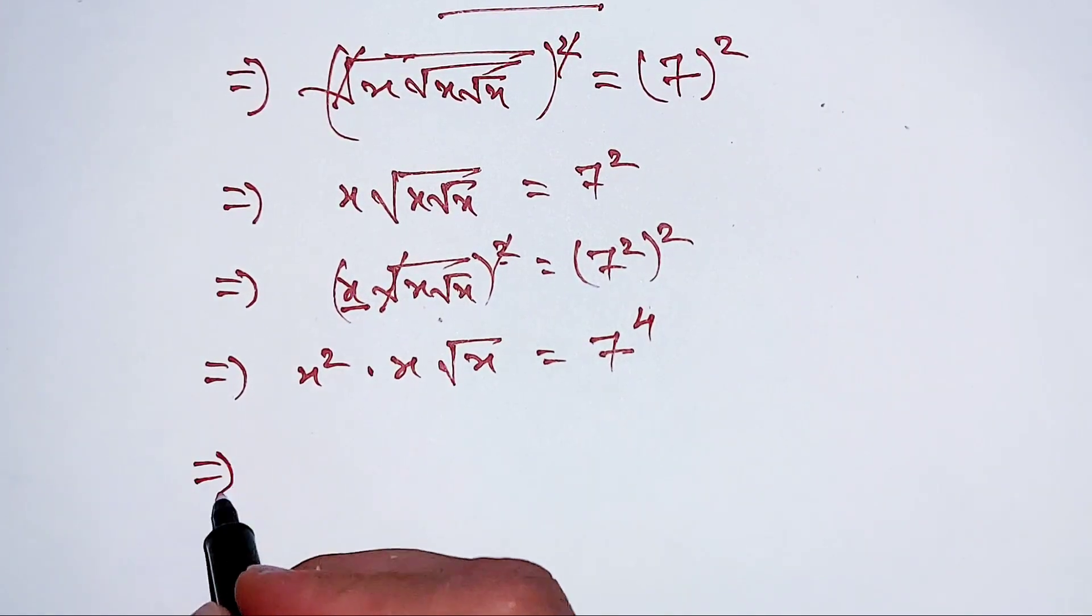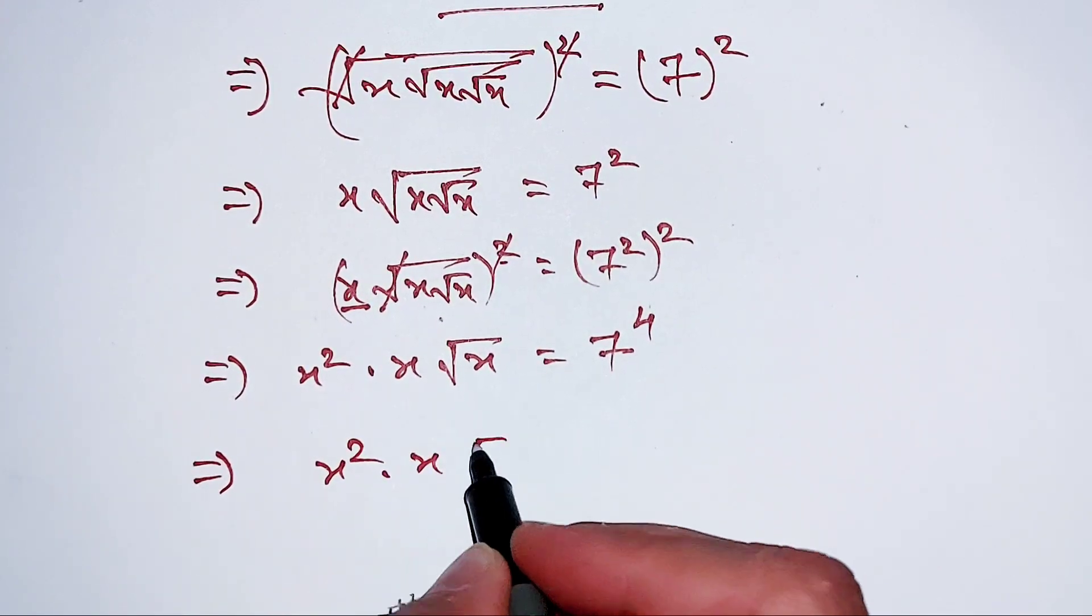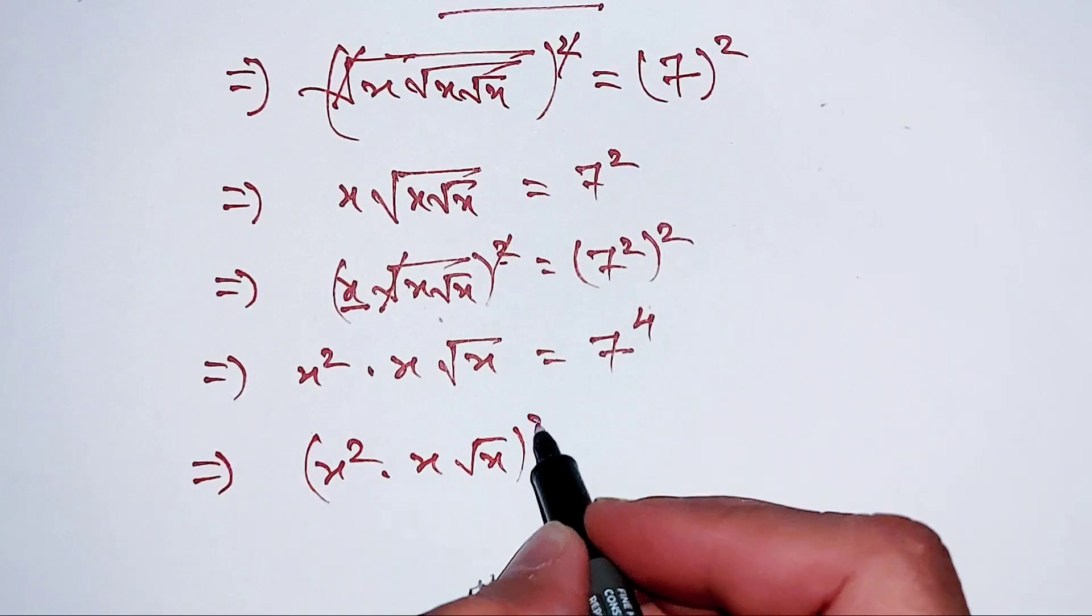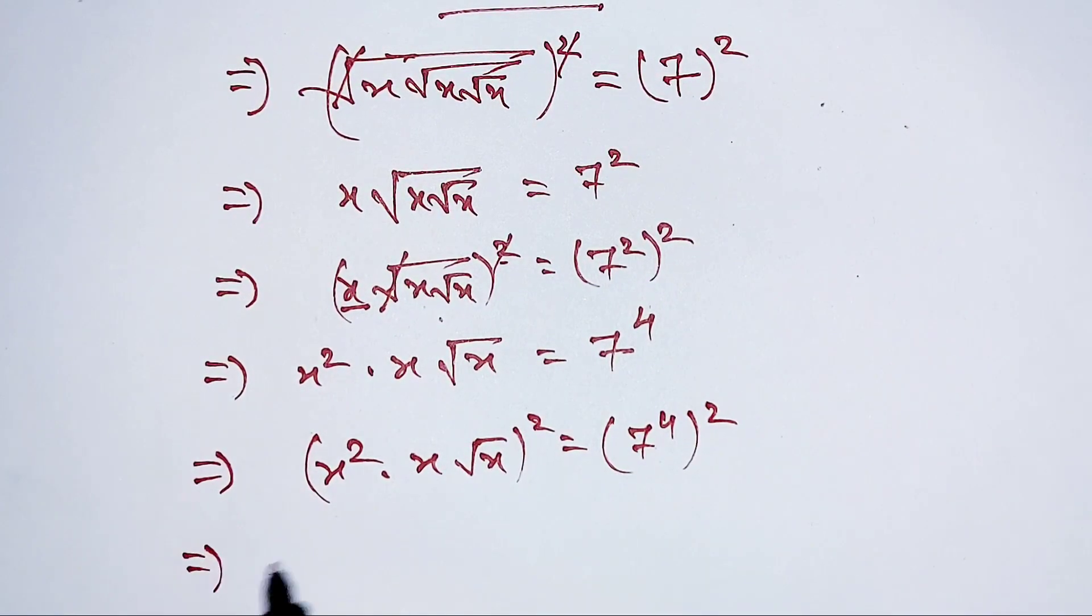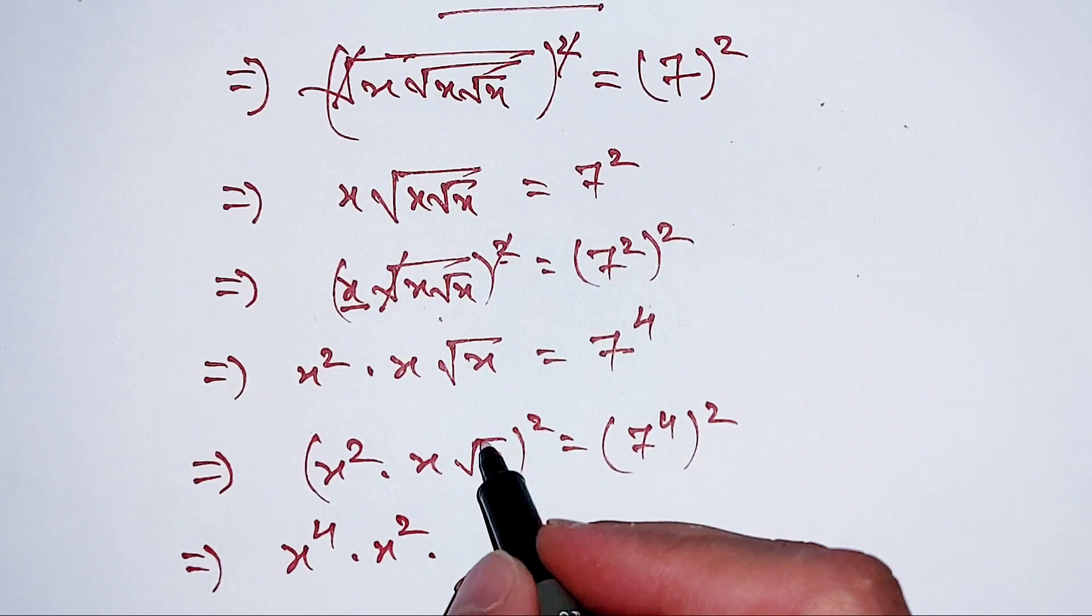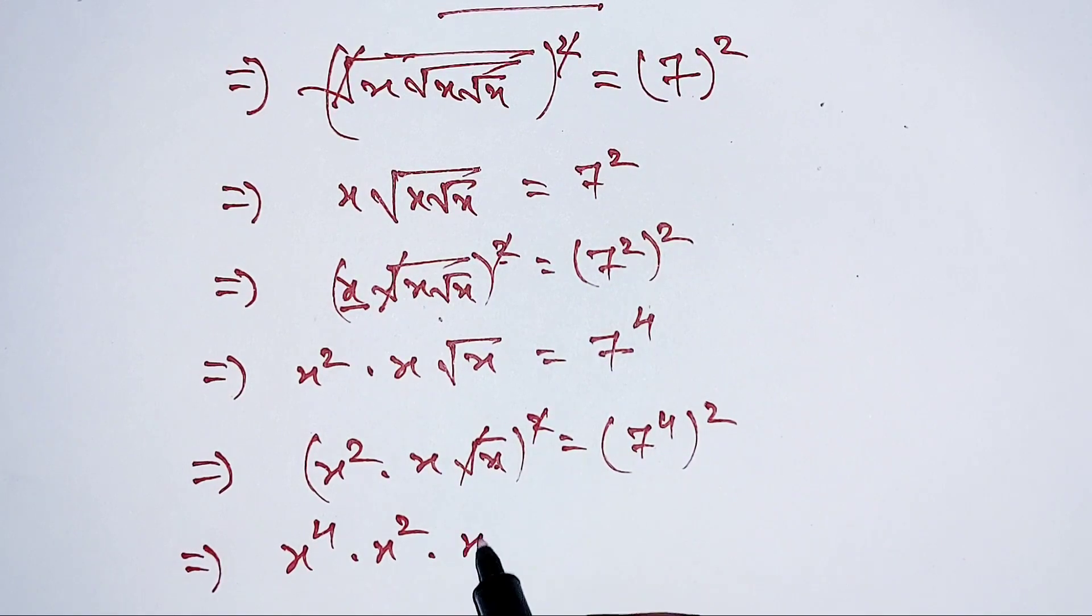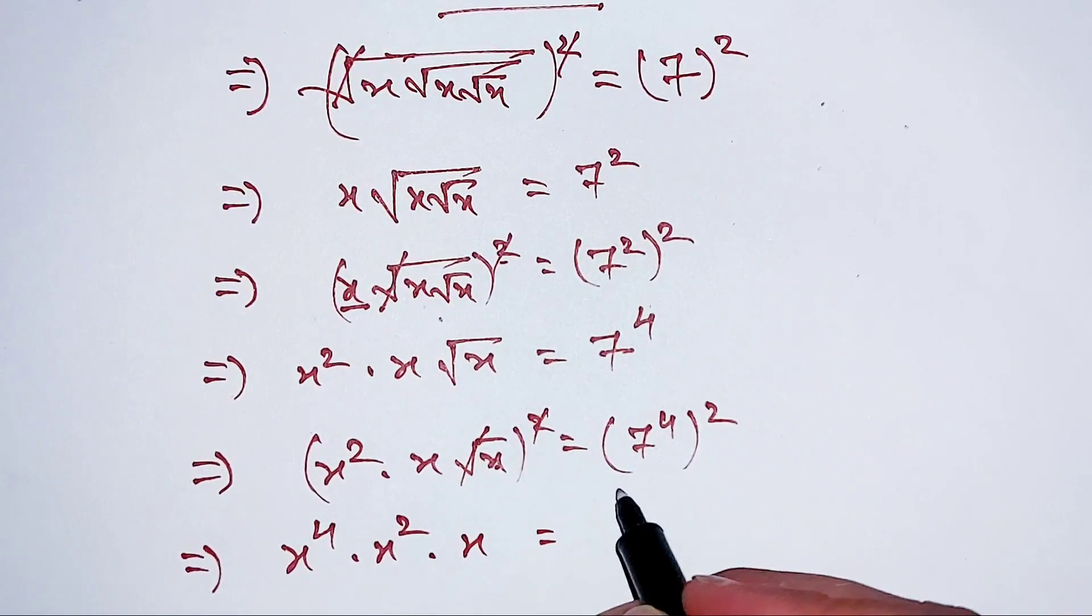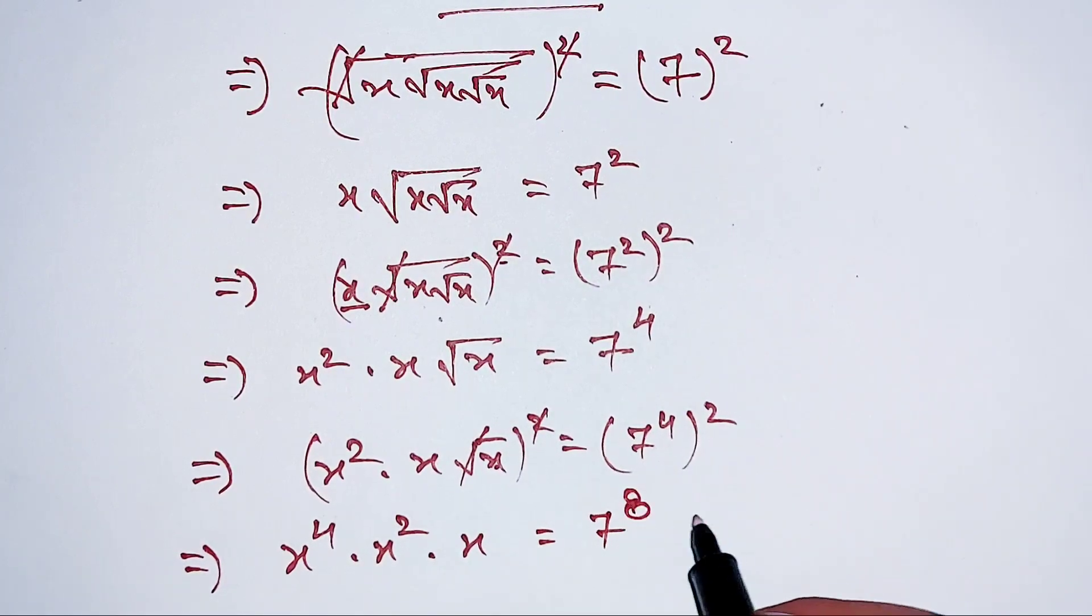Now again, we will square both sides. This x squared will become x to the power 4, and this x will become x squared. And this square root of x will be cancelled out by this square. Here, this is equal to x, and this 4 multiplied by 2 is equal to 8.